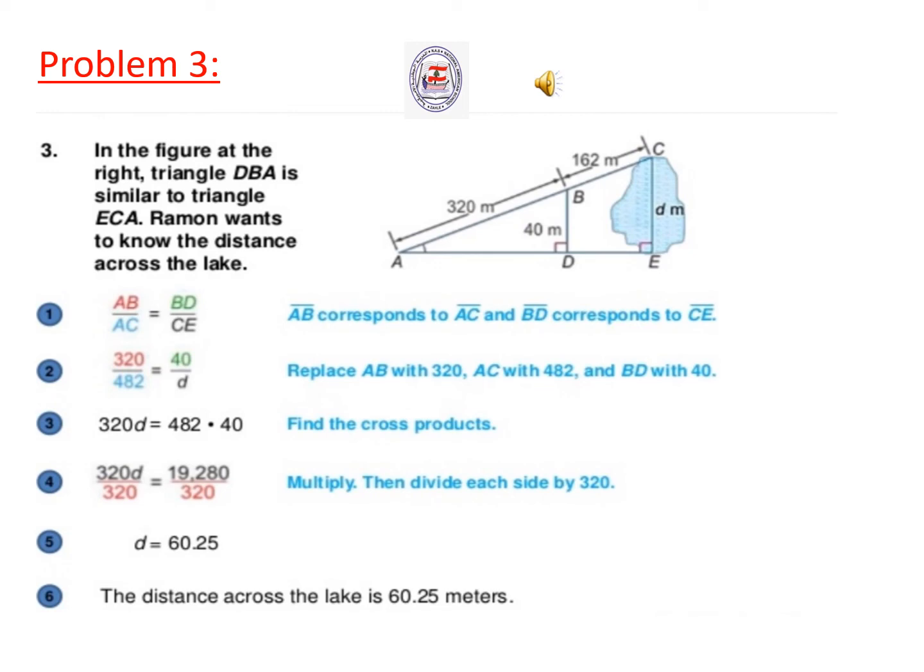So we write the ratio of similarity: AB over AC equal BG over CE. Replace AB with 320, AC with 482, and BG with 40. 320 over 482 equals 40 over d. Find the cross product: 320 times d equal 40 times 482.